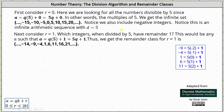Now let's consider r equals one. Which integers, when divided by five, have remainder one? This would be any integer a such that a equals five q plus one, where q is any integer and the remainder r equals one. We can select integers for q and determine a: for q equals −2, −1, 0, 1, 2, the results are −9, −4, 1, 6, 11, and so on. Thus the remainder class for r equals one is the set: {…, −9, −4, 1, 6, 11, …}. Again, this is an infinite arithmetic sequence with a common difference of five, so once we determine two or three terms we can generate the full sequence quickly.